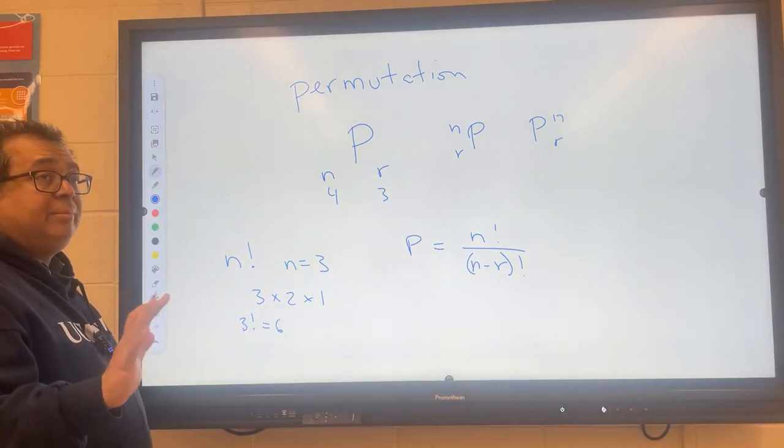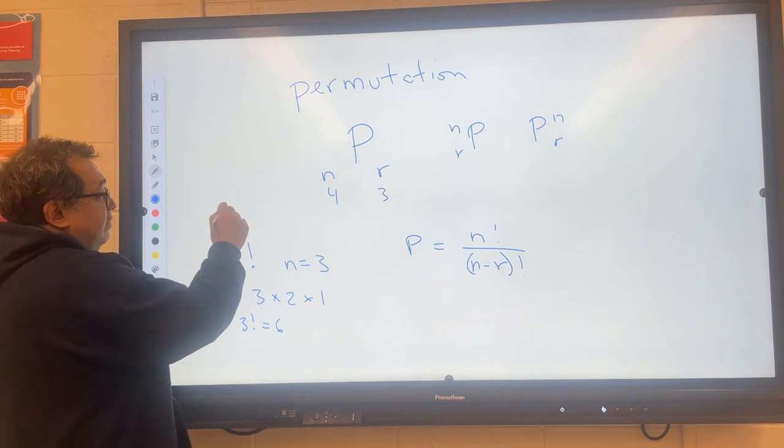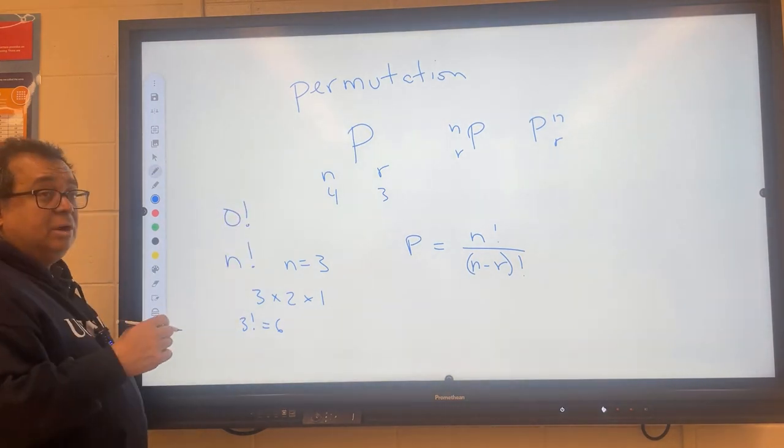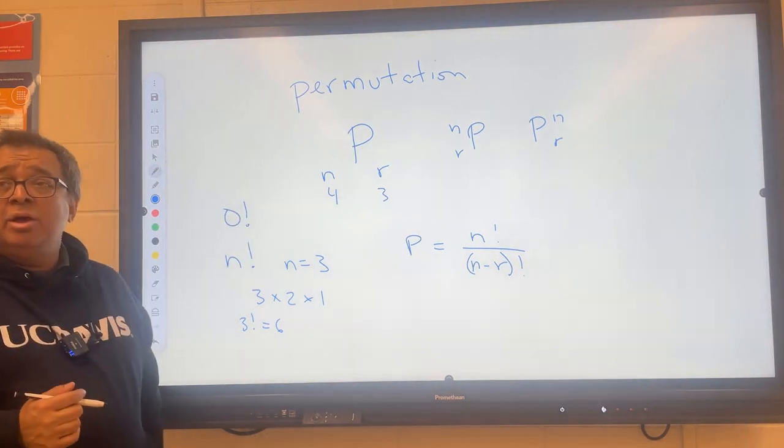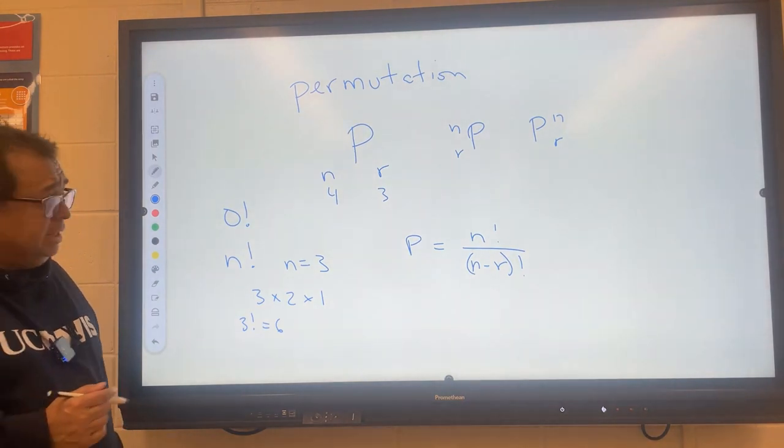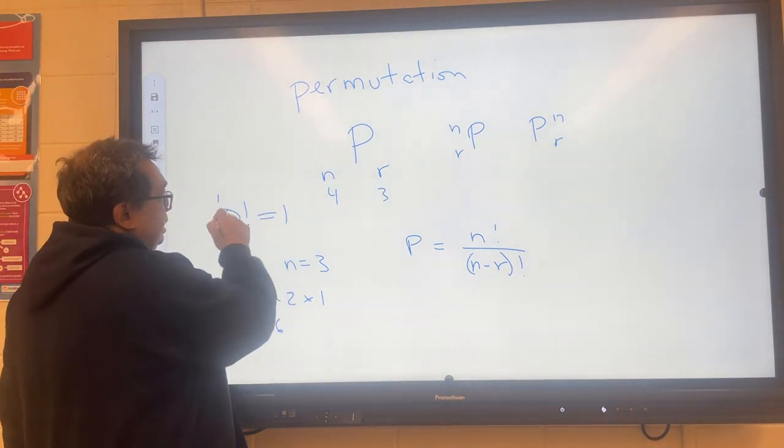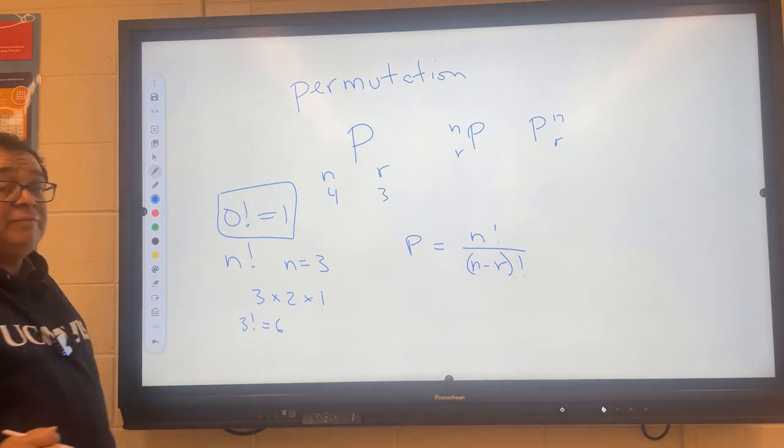One other fact that you have to remember about factorials is that 0 factorial is not equal to 0, as you might intuitively think. What is it equal to? Yes, sir. It's equal to 1. So that is a fact that we have to keep in the back of our minds.